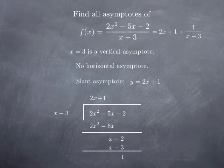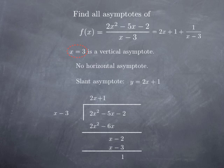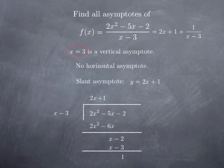One last remark about equations of asymptotes: asymptotes are lines, so you must give them in the format of an equation of a line. For example, x equals 3 is an asymptote — just writing 3 is not an asymptote, as a number is not an equation of a line. Similarly, writing 2x plus 1 is not the equation of the asymptote; y equals 2x plus 1 is the correct form.